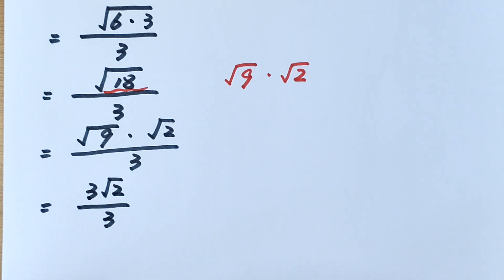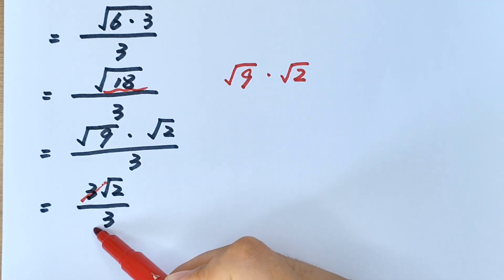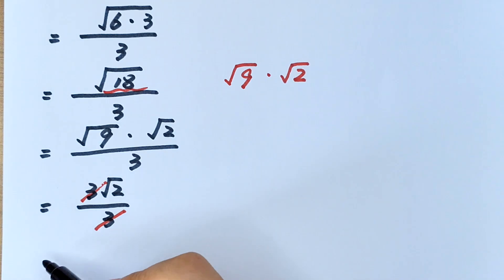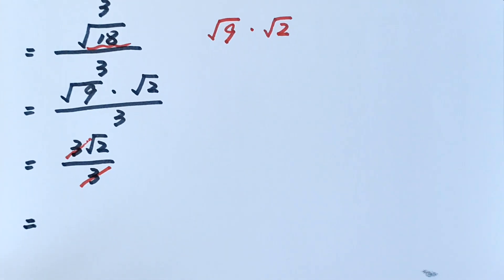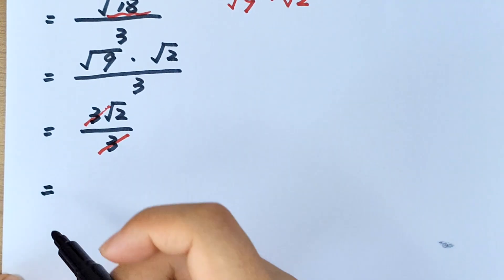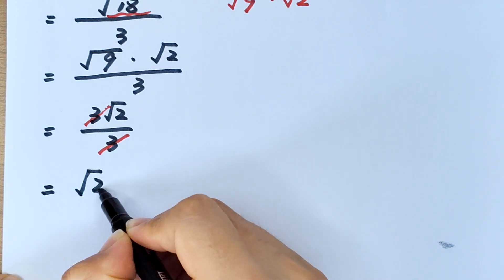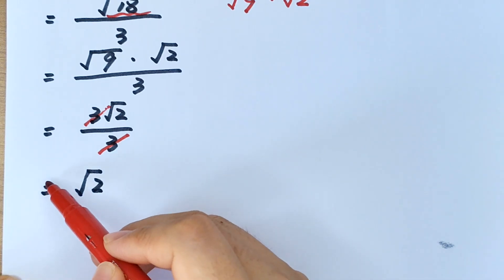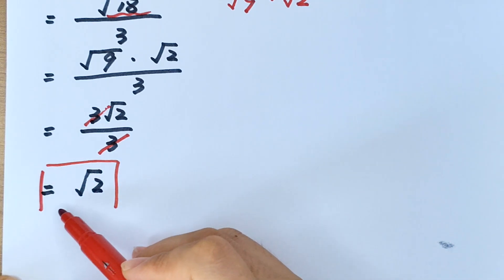The 3 in the numerator and the 3 in the denominator will cancel. So the result is equal to square root of 2. This is the final answer.